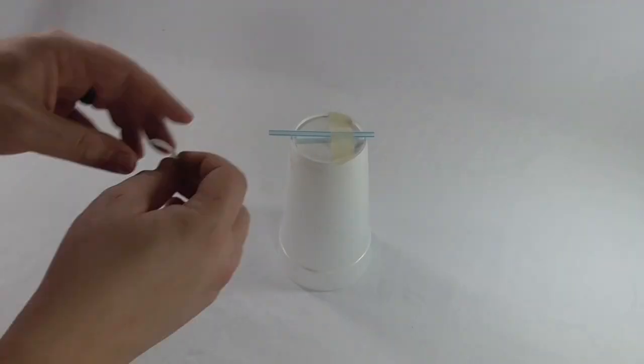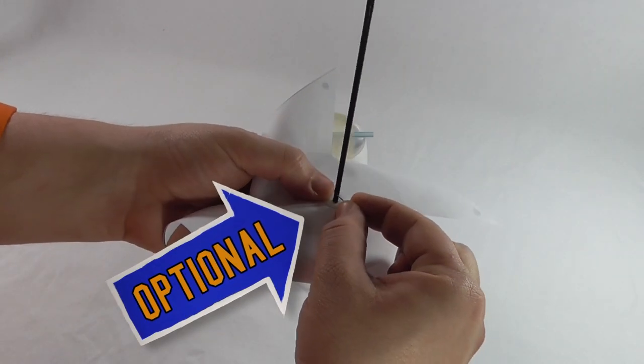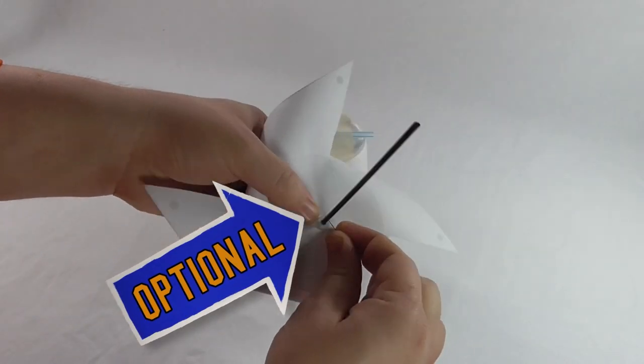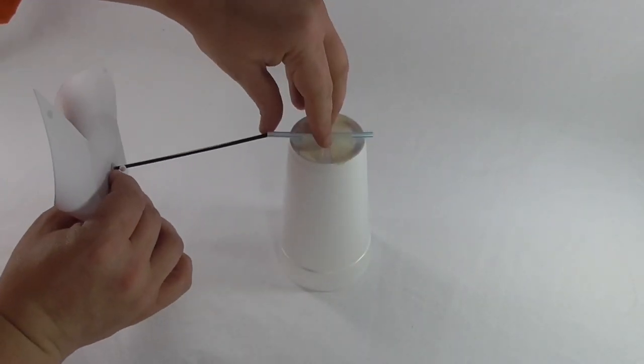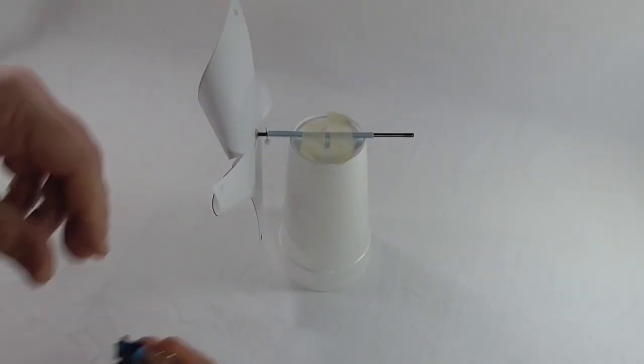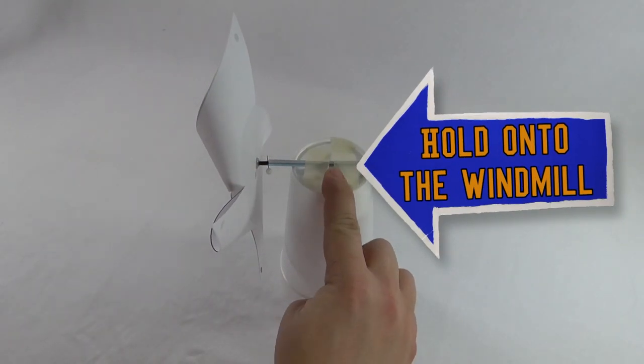Tape the drinking straw to the top of the large cup. Use an optional push pin to keep the rotor spinning smoother. Insert the coffee stirrer rotor into the drinking straw stator. Fasten a binder clip to the back of the rotor.